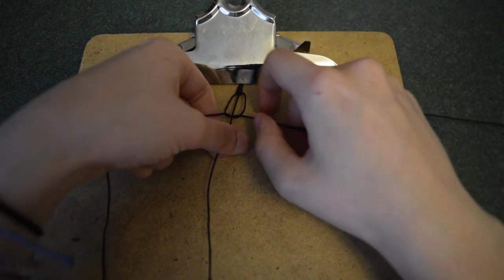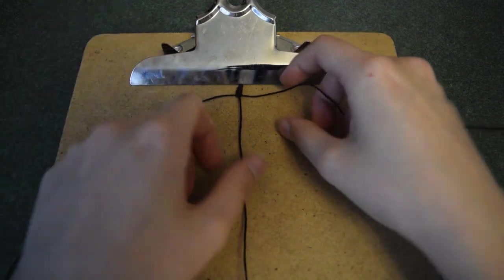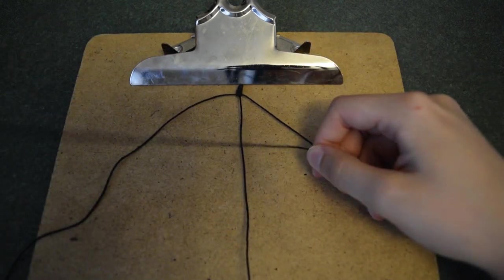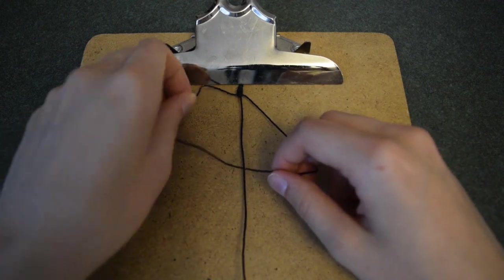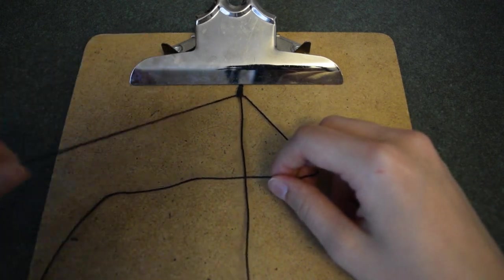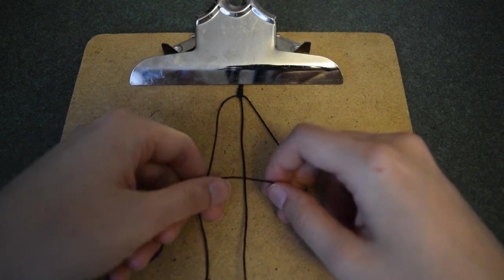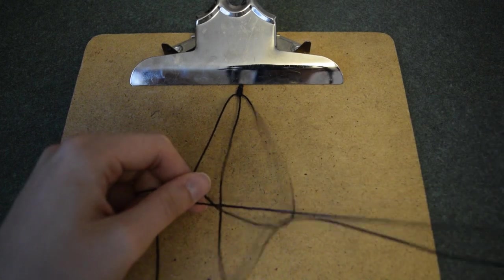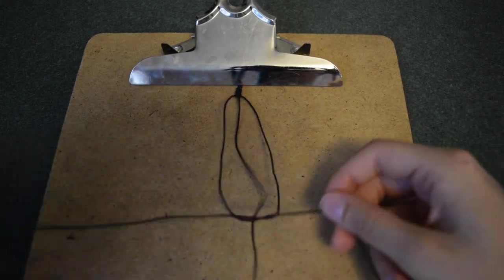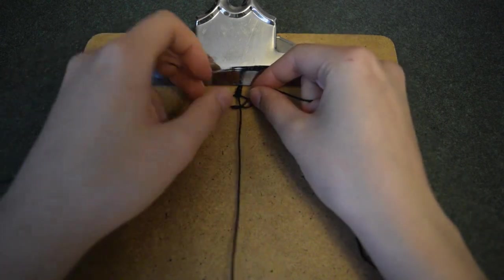To make our next square knot, we will do the mirror of what we just did on the left hand side. I am first taking the cord on the right hand side of the core strand and forming a backwards four over the central string. Next, I am taking the cord on the left hand side and passing it over the tail of the backwards four. I am then passing it under the core string and up and through the loop formed by the right hand side string. Finally, I pull the ends through to make this tight around the core string.